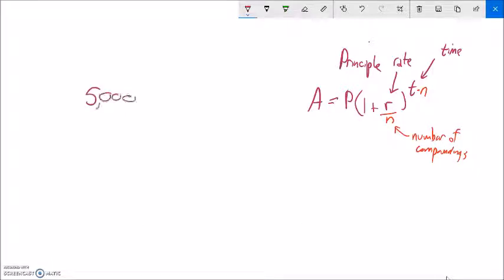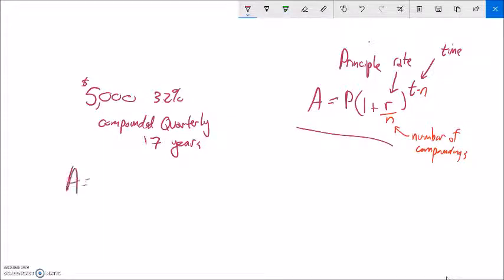I'm going to erase and let's do another example. Let's say that $5,000 is invested somewhere at 3.2% and it's going to be compounded quarterly. And it's going to be left there for 17 years. We want to know how much it's going to be worth after the 17 years. So let's set it up. We can just use this relationship. The amount is the principal, 5,000.